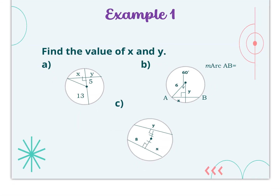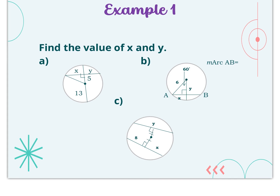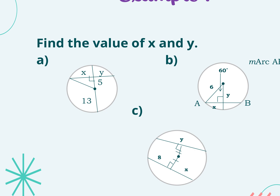Let's solve some problems using those theorems. In this first one, you have two chords — you can see the diameter hitting a chord at 90 degrees. We know that if a diameter crosses a chord at 90 degrees, the two chord pieces are equal, so X is going to equal Y. The 5 you see there is the length of a small piece, not related to Y directly. We can see the radius is 13, so this radius is also 13.